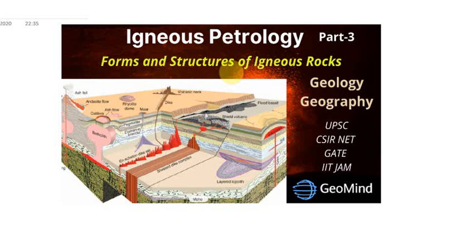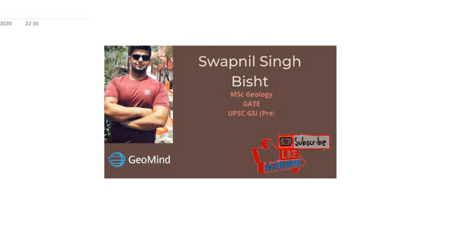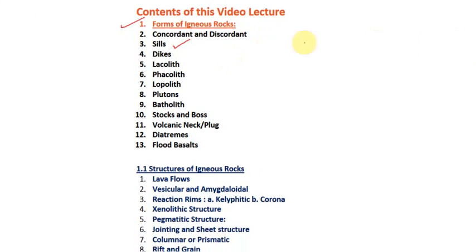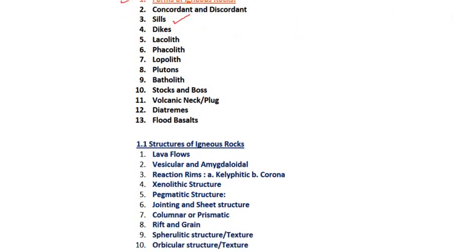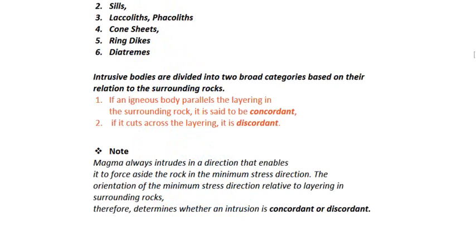Hello guys, welcome to GeoMind. In today's video we are going to start Part 3 of igneous petrology. The topic of this video lecture is forms and structures of igneous rocks. If you are new to the channel, don't forget to like, share and subscribe to GeoMind. We will discuss forms of igneous rocks such as concordant and discordant, and then 10 to 11 structures of igneous rocks.